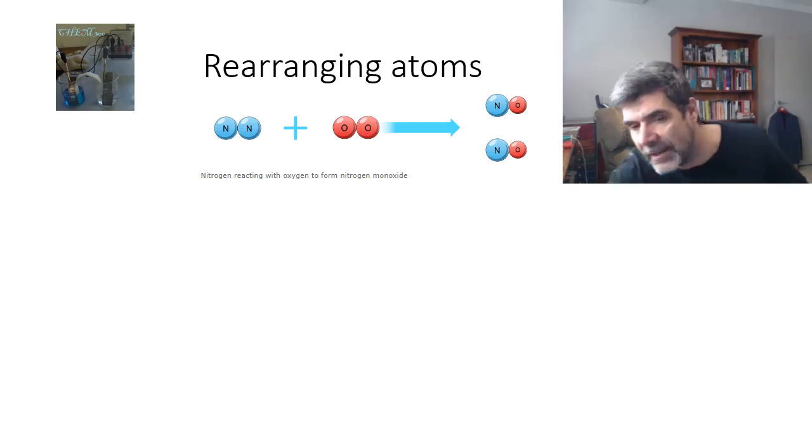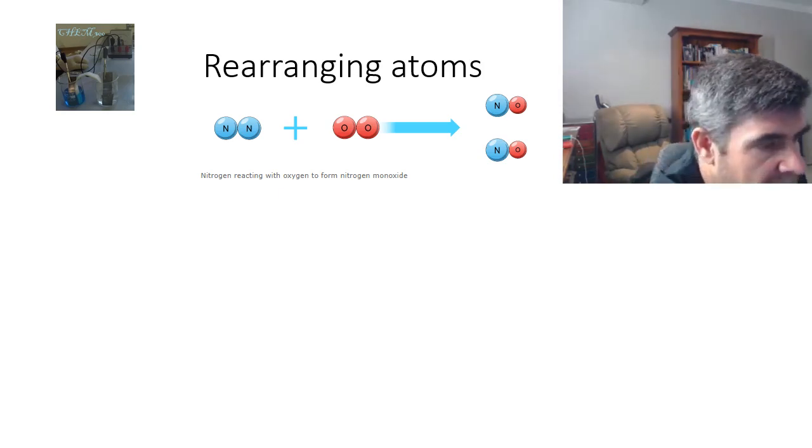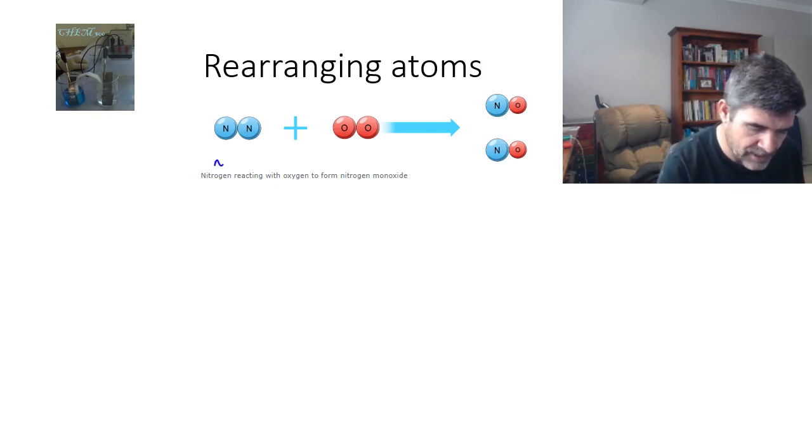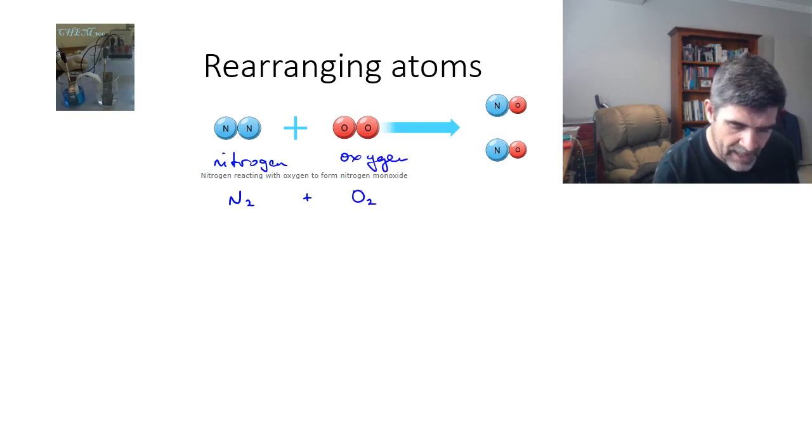So I have on the screen here an example of a rearrangement, in which case we have nitrogen and oxygen forming nitrous oxide. In this case, we would have the nitrogen here, which is N2, combining with the oxygen molecule here, which is O2. And they form two molecules of nitrous oxide. And of course, all of these would be gases as well.